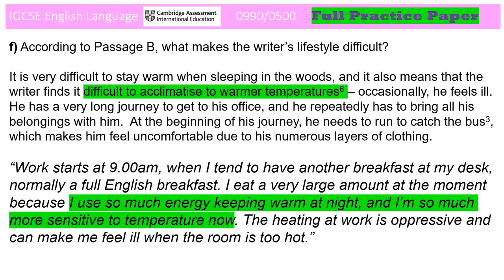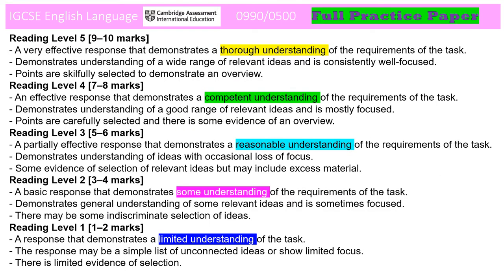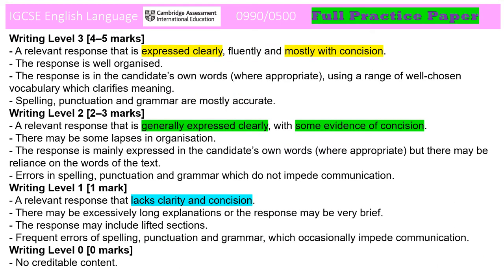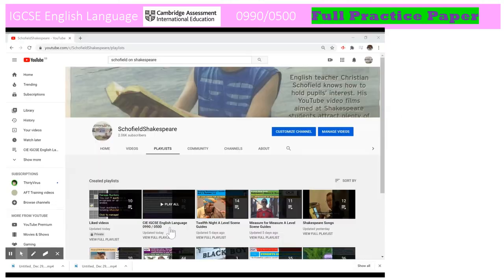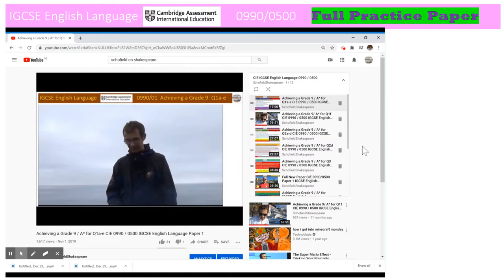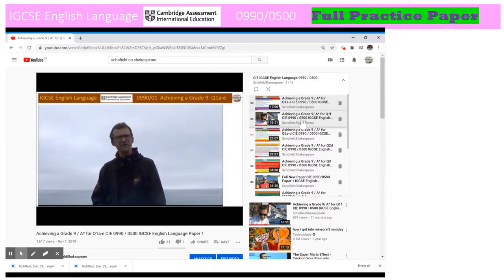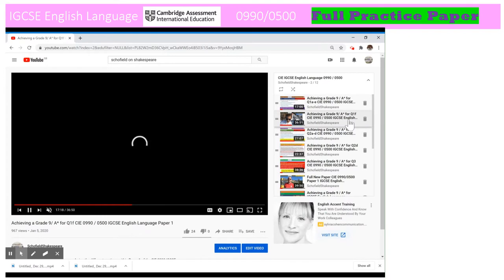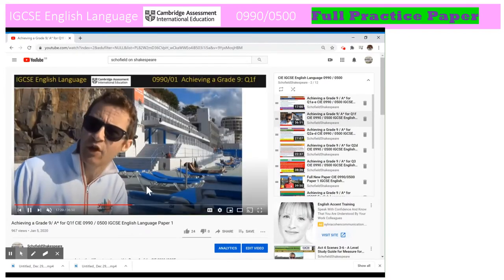Note the sharp focus on the question rather than simply retelling the passage, and the sophisticated understanding implied by completely rephrasing points from the text. My phrase 'difficult to acclimatise to warmer temperatures' succinctly summarised a section in the passage. Time now for you to make a judgement call about your own response. Press pause to give yourself a mark out of 10 for reading, and a mark out of 5 for writing. If you haven't yet watched the 1F video, I'd very much recommend doing this — it's within the Schofield on Shakespeare playlist, and there's 37 minutes talking you through 1F and giving you lots of practice.